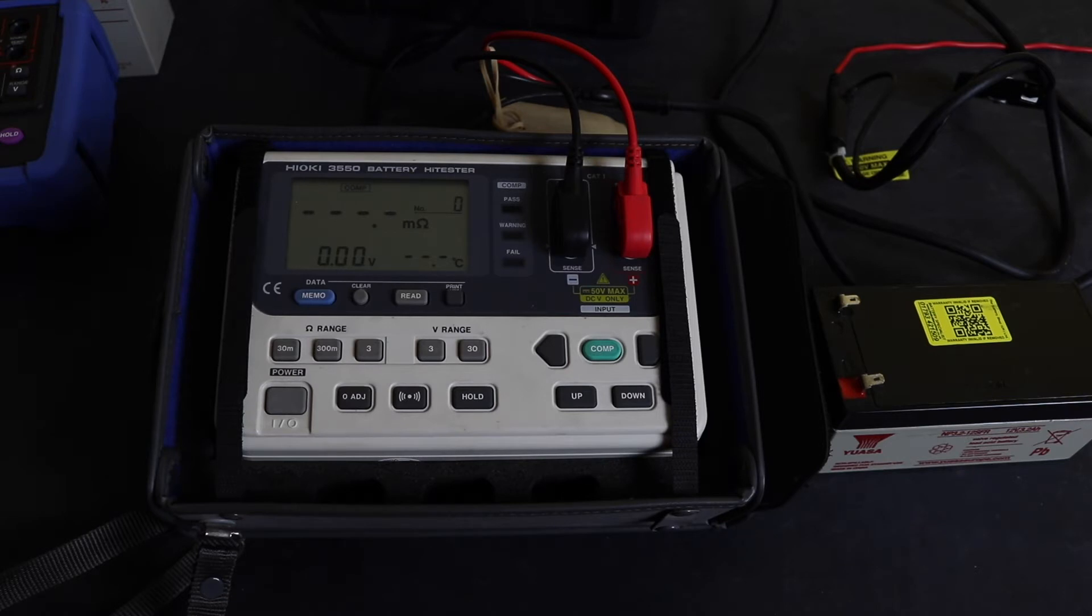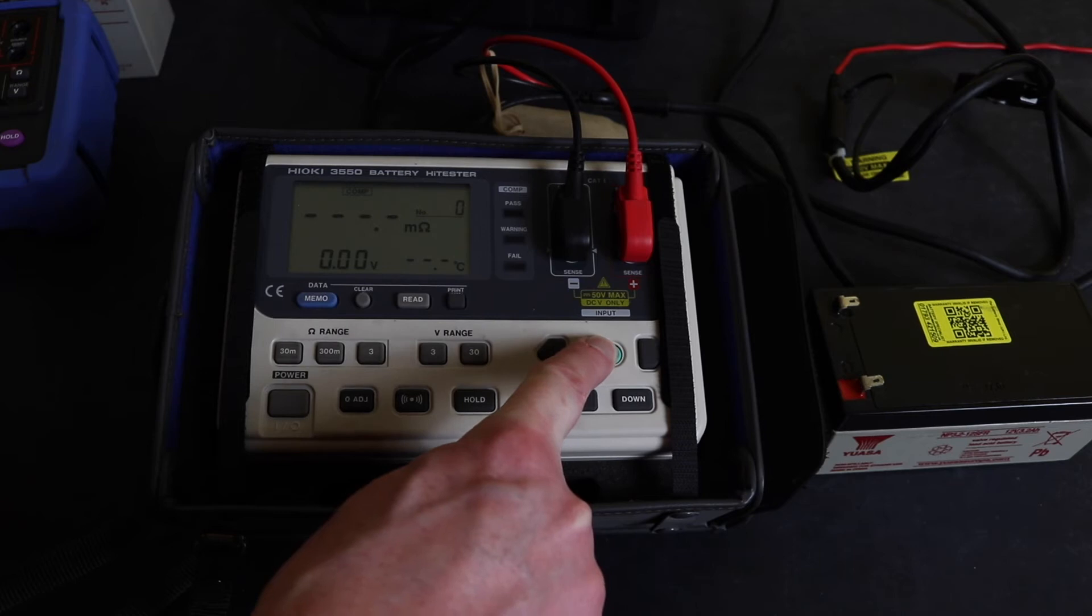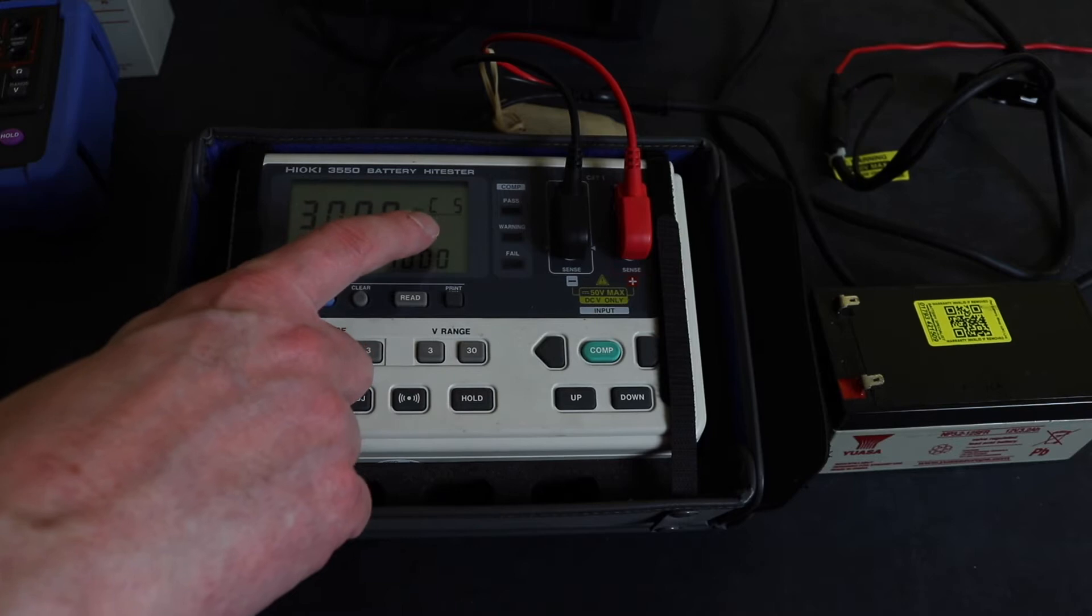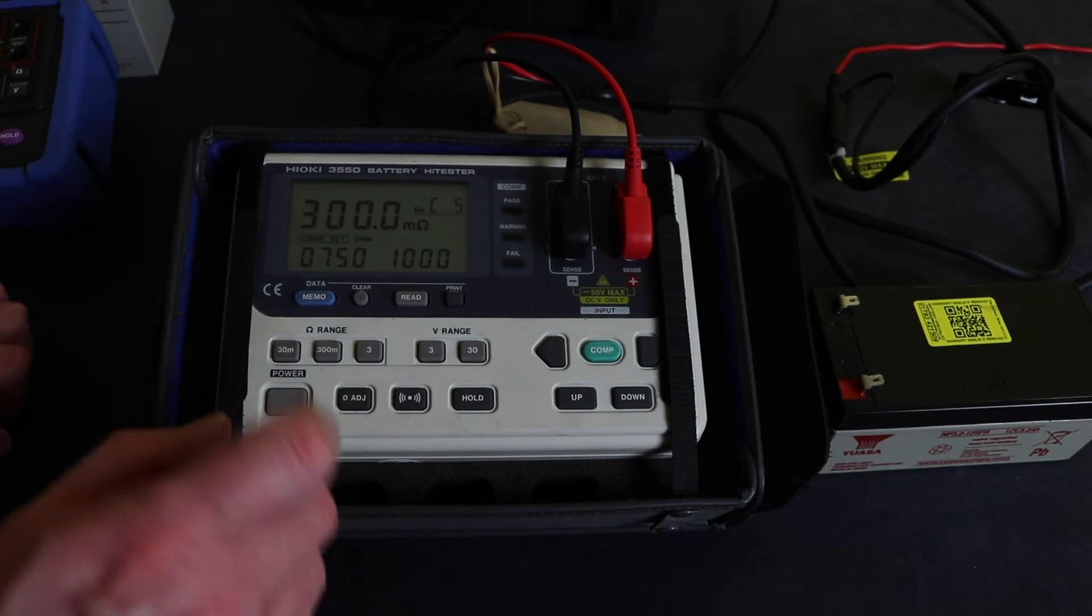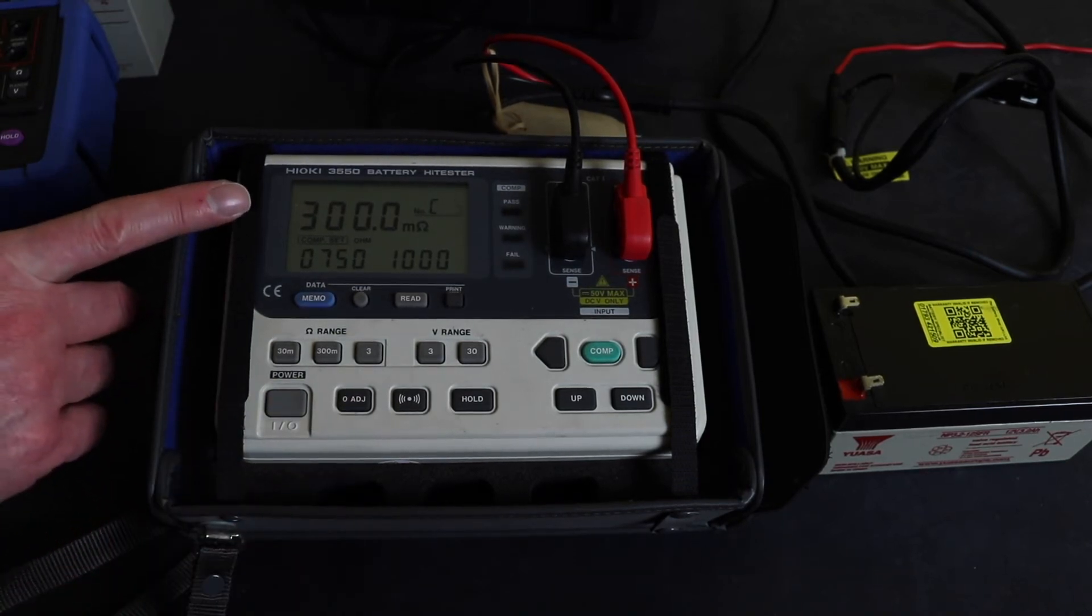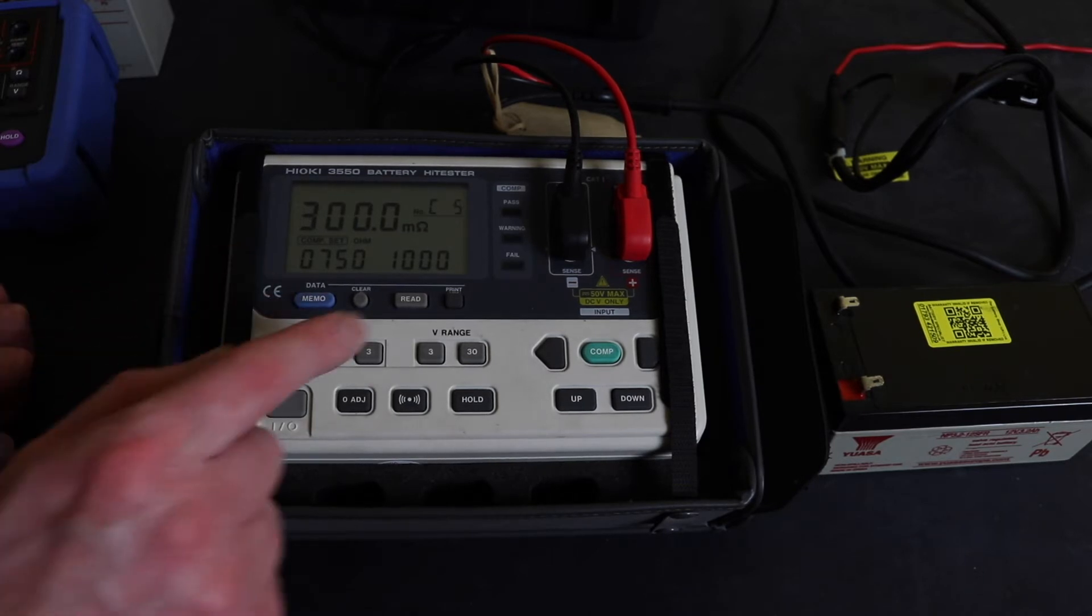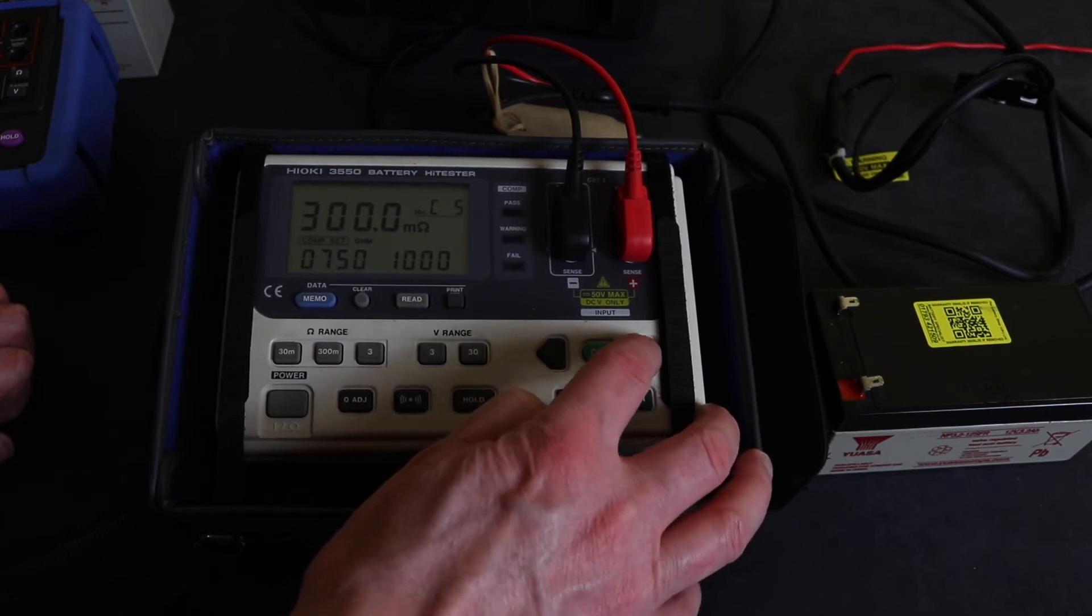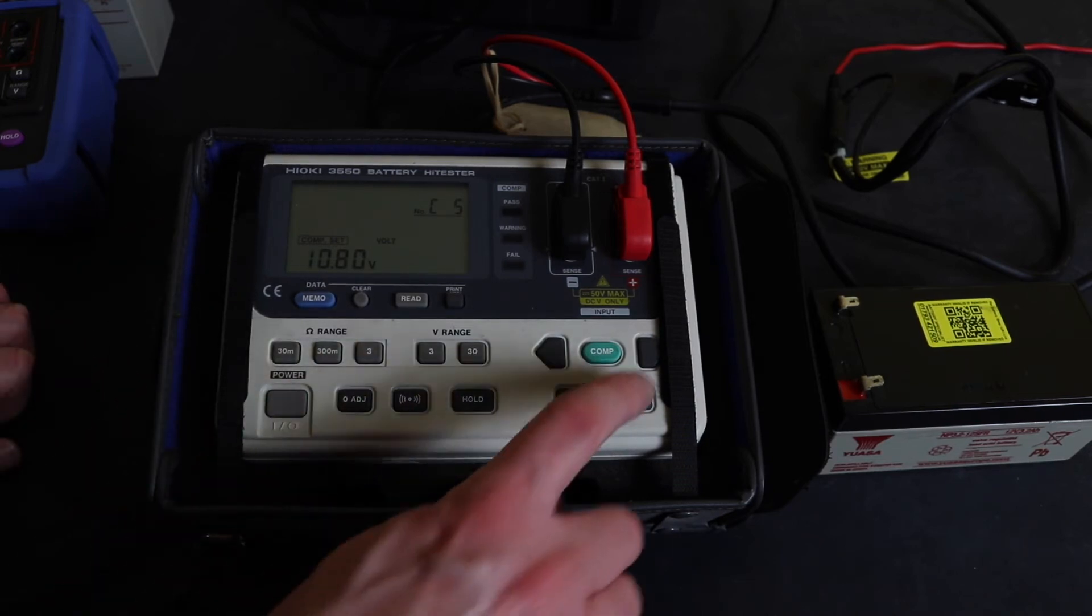I'll set up the old Hioki here. If you go to comparison function, you see I've set this up on comparator set number five. It's set to the 300 milliohm range with 75 milliohms alarm and 100 milliohms fail. Then it's set to 10.8 volts fail on the voltage setting.